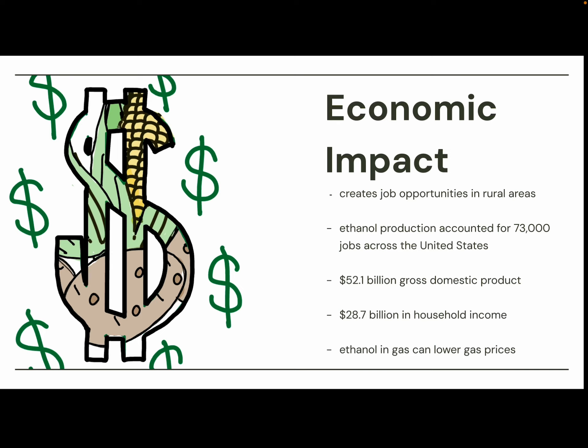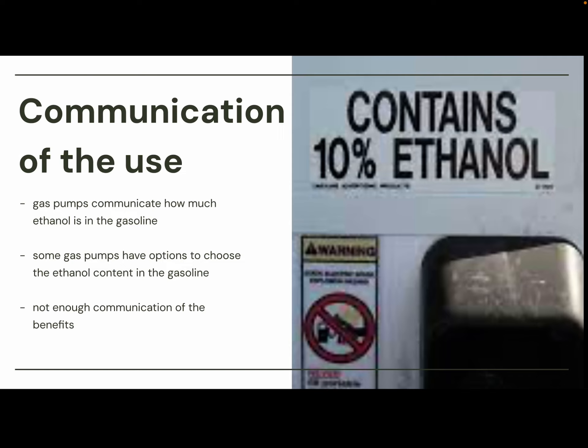The economic impact is that it creates job opportunities in rural areas like farms and smaller towns. Ethanol production accounts for 73,000 jobs across the United States, contributes $52.1 billion to gross domestic product, and $28.7 billion in household income. Ethanol blended gas can also lower gas prices, so it affects everyone and not just those producing ethanol.